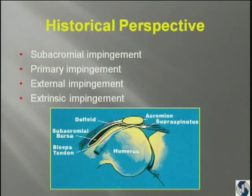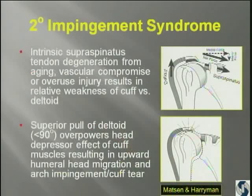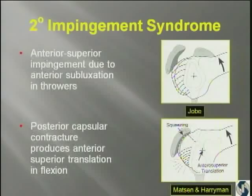In 1932, Codman talked about what we would now consider secondary impingement, which is associated changes in the supraspinatus causing changes in the subacromial bursa. Mattson and Harriman showed us that with intrinsic supraspinatus degeneration from aging, vascular compromise, or overuse, there would be relative weakness of the rotator cuff in relationship to the deltoid, causing a superior pull and impingement.